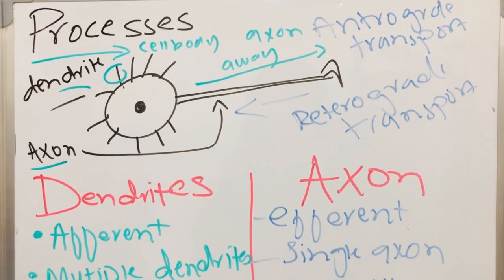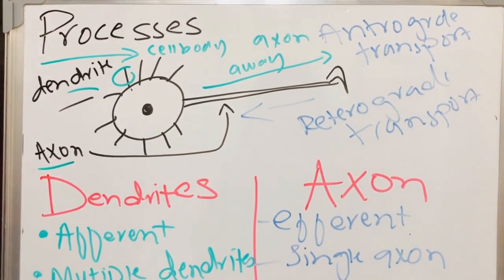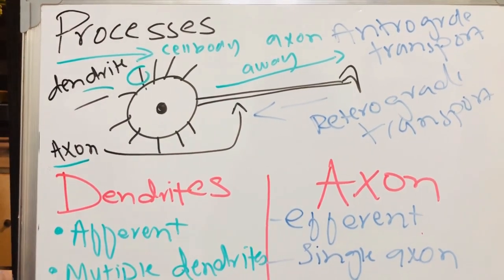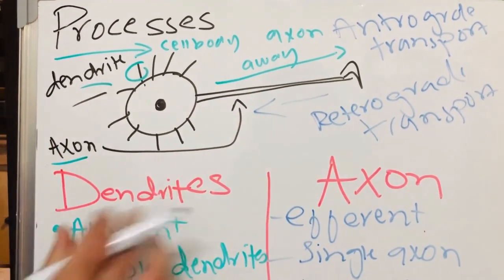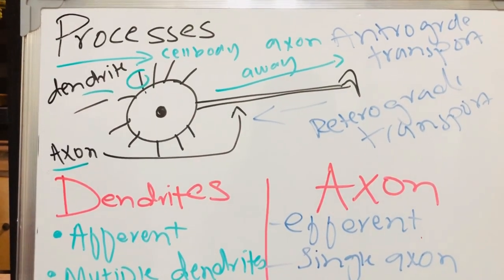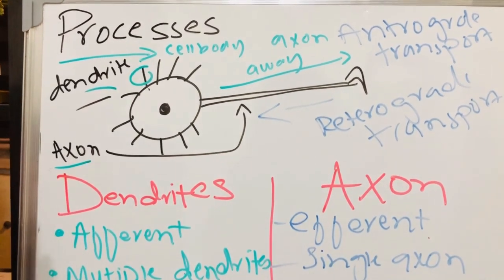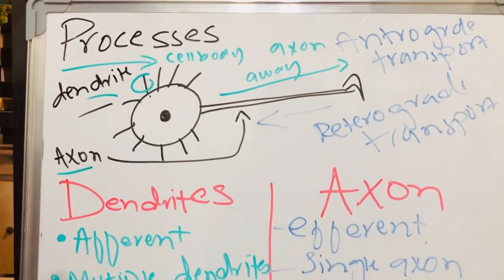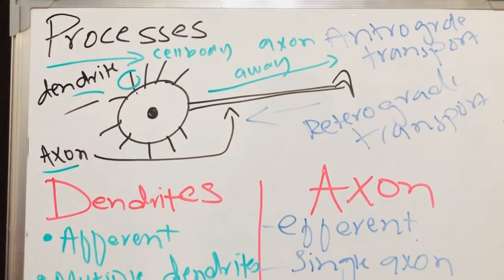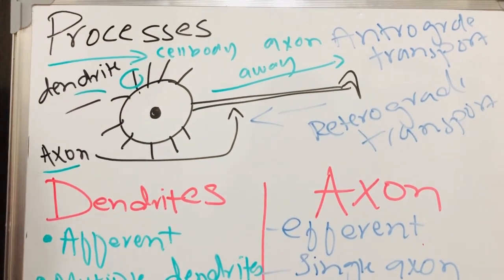Previously we discussed our cell body. We said we have two processes of neurons: the dendrites, projection-like structure, and the axon, the long part. Now we will discuss the processes. The dendrite catches the sensory information and transmits toward the cell body.